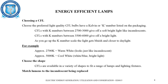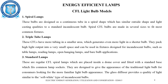Choose the shape of the CFL to fit your lamp and fixture, matching lumens to the incandescent being replaced. CFL bulbs are classified as spiral lamps, triple tube lamps, and standard lamps. Spiral lamps are designed as a continuous tube in a spiral shape with better light casting quality. Triple tube CFLs have more tubing in a smaller area, generating more light in a shorter bulb — they pack high light output into a very small space and can be used in table lamps, reading lamps, open hanging lamps, and bare bulb applications.